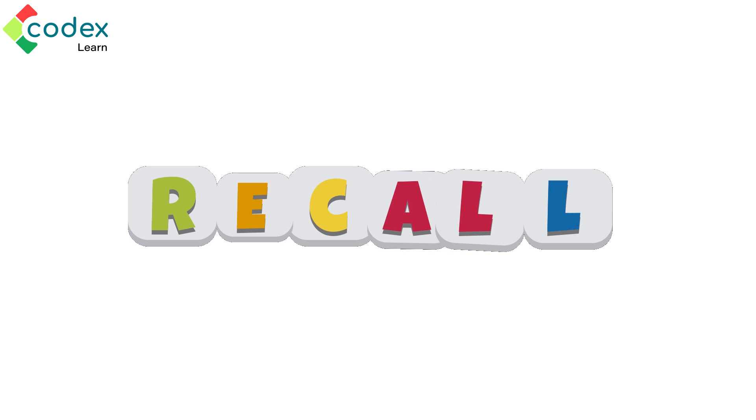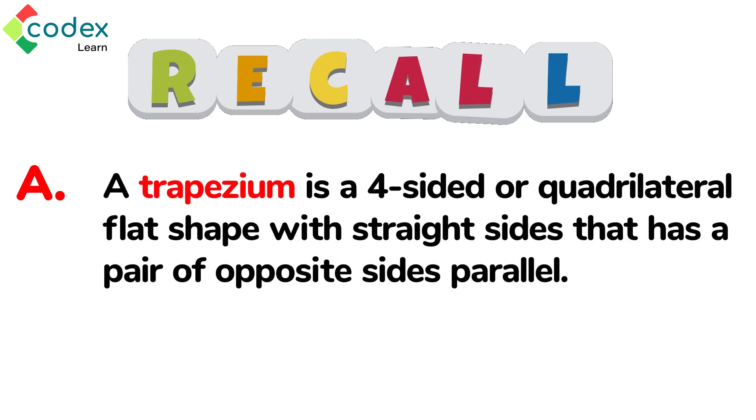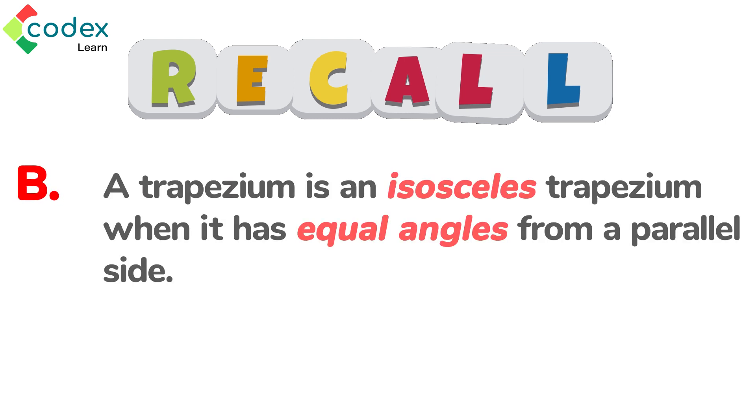Now let us remind ourselves of some important things we learned in this lesson. A: The trapezium is a four-sided or quadrilateral flat shape with straight sides that has a pair of opposite sides parallel. B: A trapezium is an isosceles trapezium when it has equal angles from a parallel side.